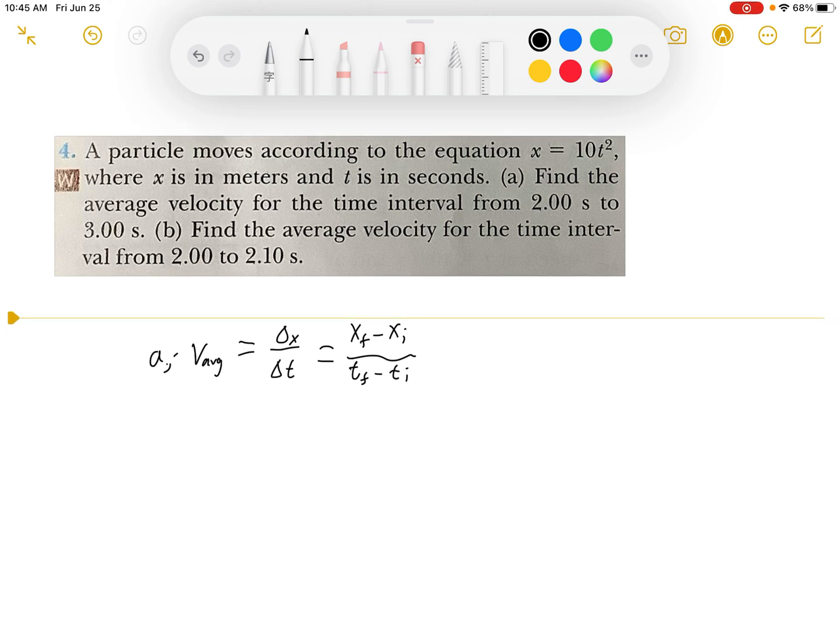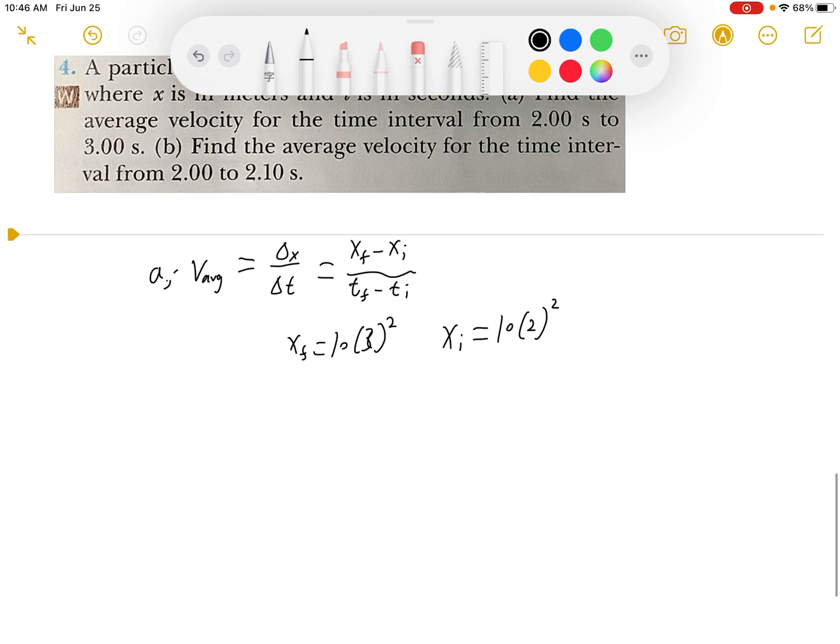So for part A, x final will be at 3 seconds. So x final equals 10 times 3 squared and x initial will be 10 times 2 squared.